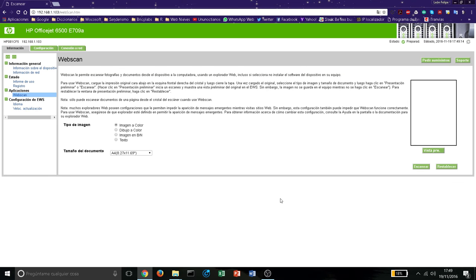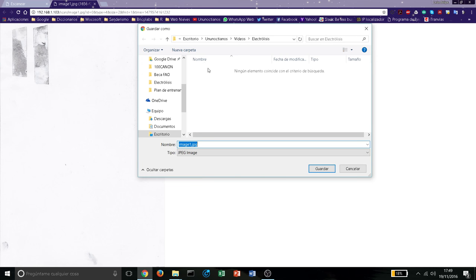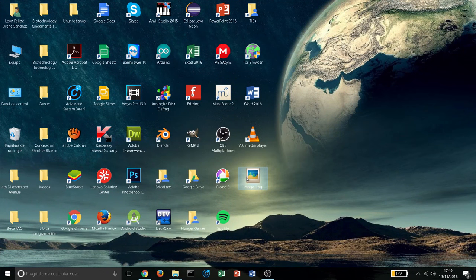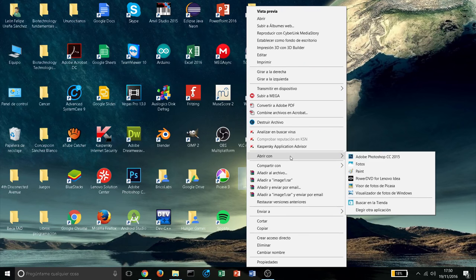Ya estamos aquí de vuelta. Y vamos a escanear nuestra huella dactilar. Pulsamos el botón y esperamos a que el escáner haga su trabajo. Ya tenemos nuestra imagen. Guardamos la imagen. Y la abrimos para los que tengamos Windows 10 con la aplicación de fotos. Sin más complicaciones.